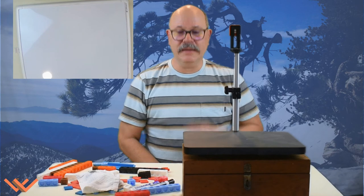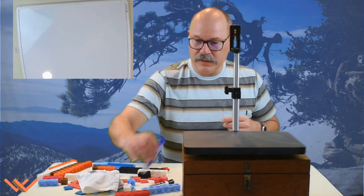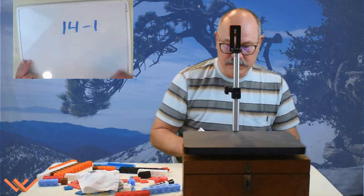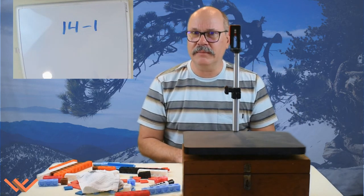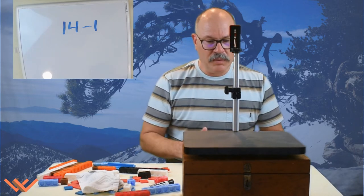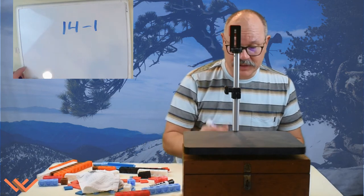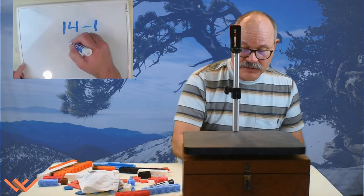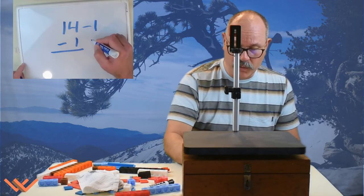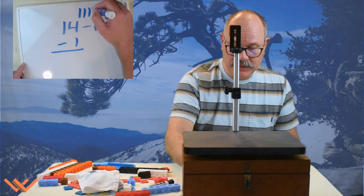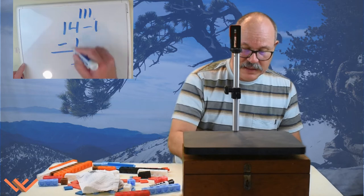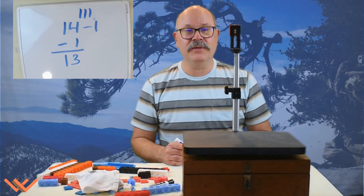I'm going to use the whiteboard instead. I'm going to work with 14 minus one. How would you figure that out? Take a moment, pause the video, and see what you would do. Well, here's what I would do. I would take that minus one. I have 14, so there's four things. One, two, three, four. Take away one — I want to have three ones. So that's going to be three. I still have a ten in that column. It's 13.